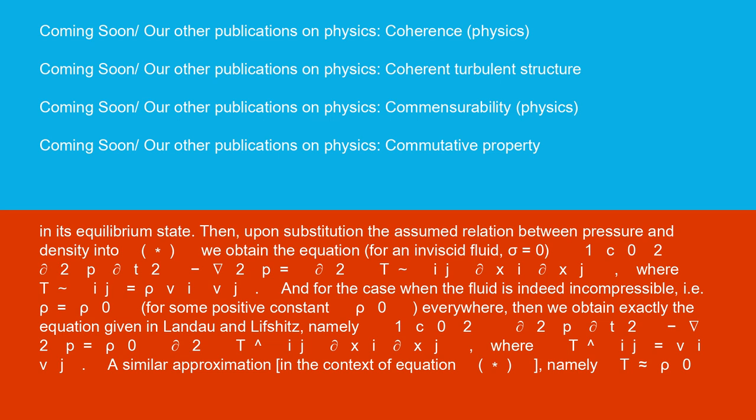For an inviscid fluid, σ = 0, (1/c₀²)∂²p/∂t² - ∇²p = ∂²Tᵢⱼ/∂xᵢ∂xⱼ, where Tᵢⱼ = ρvᵢvⱼ.